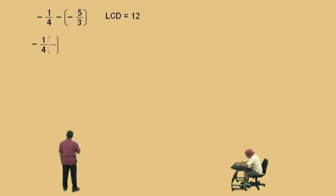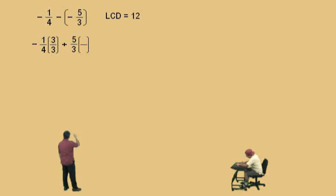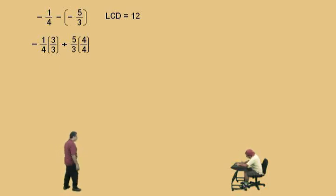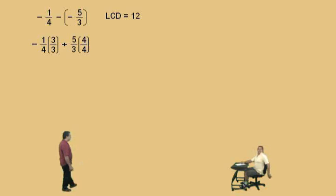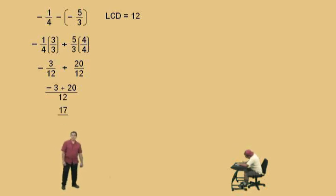Negative one-fourth — multiply top and bottom by three. And notice, when we subtract negative five-thirds, it now changes to plus five-thirds. For the five-thirds, multiply top and bottom by four. So the first fraction is negative three over twelve, and the second is twenty over twelve. Let's work with those numerators: negative three plus twenty is seventeen. Seventeen all over twelve.